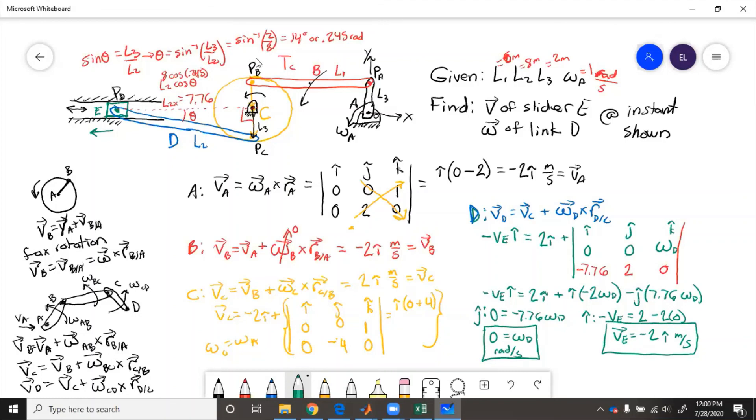So to recap what we did from this problem. We just follow the chain from the start to the end, using the relative velocity of r cross omega. Found it for every point. Plugged it in. When we got to having too many unknowns, then we used the vector equation, solved out x and y for the omega and the v.